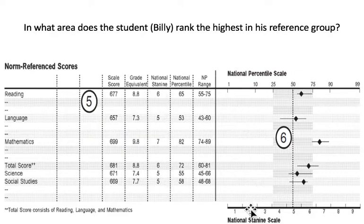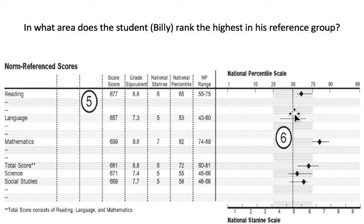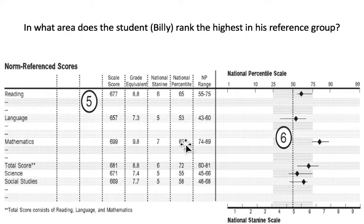There are a lot of fives here. The stanines are down here. You should go by the national percentile. You could usually go by the national percentile range, but that represents the range of where the true score likely is. Because these lines are different, sometimes the range is a bit bigger but less reliable. The national percentile is the diamond — it represents what they actually got. So where does Billy rank? Mathematics. That's where the diamond is the farthest to the right and has the highest national percentile rank score.